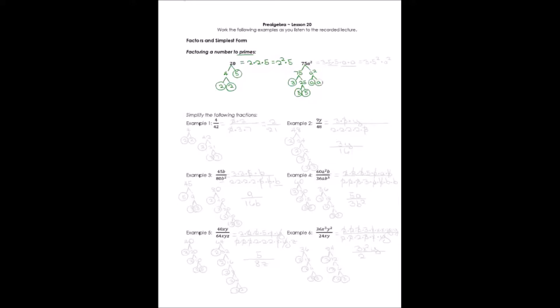What about a squared? Well, a squared is pretty easy: a times a. Once I have a variable down to just a single variable, that's its factorization. So the prime factorization of 75a squared is 3 times 5 times 5 times a times a. Writing in exponential notation: 3 times 5 squared times a squared.